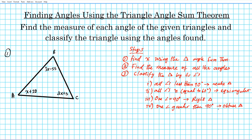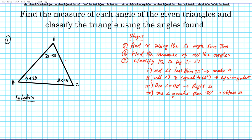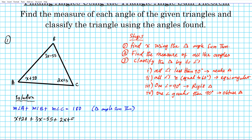So these are the classifications we're going to be using. Let's go back to the triangle and go to step one, which is to find the value of x. To do that, we're going to use the triangle angle sum theorem, which states that the sum of angles in a triangle is 180 degrees. So: measure of angle A plus measure of angle B plus measure of angle C equals 180 degrees. Now we substitute: angle A is x plus 20, angle B is 3x minus 55, and angle C is 2x plus 5 — all equal to 180.